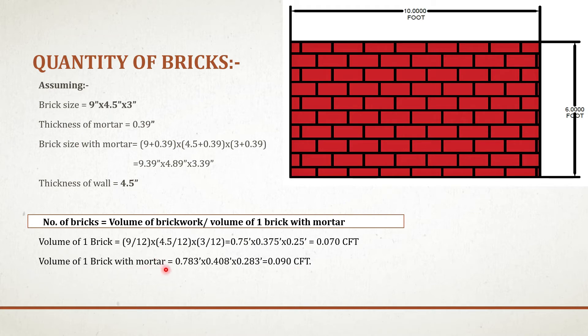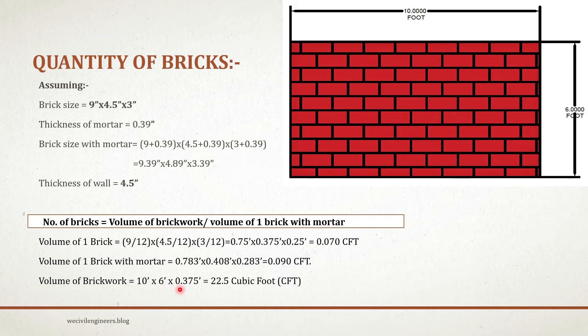Now we know the volume of one brick with mortar. Let's find out the volume of brickwork. Volume of brickwork equals to length multiplied by height of the wall multiplied by thickness of the wall. Length is 10 foot, height is 6 foot, and thickness is 4.5 inch, which is 0.375 foot. Multiplying these three values gives 22.5 cubic foot. Therefore, volume of brickwork is 22.5 cubic foot.